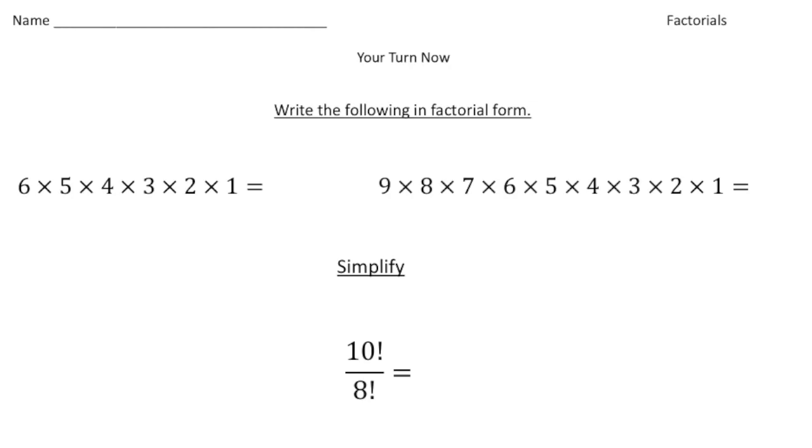Alright, welcome back. Let's have a deal with these practice problems. So the first two, it says, write the following in factorial form. So 6 times 5 times 4 times 3 times 2 times 1 really equals this 6 factorial. And here we have 9 times 8 times 7 all the way down to 1, so we can just write this just as 9 factorial.